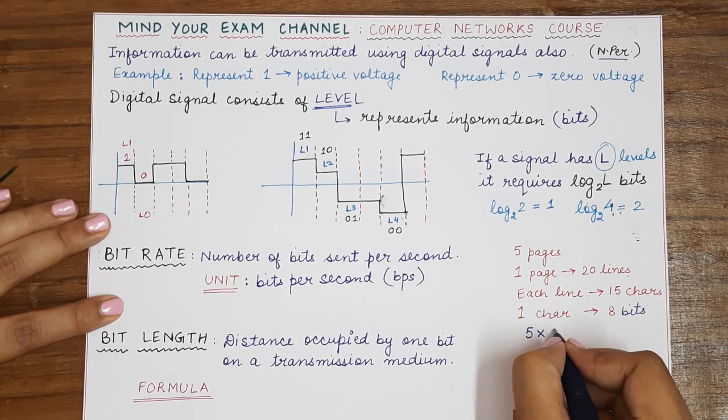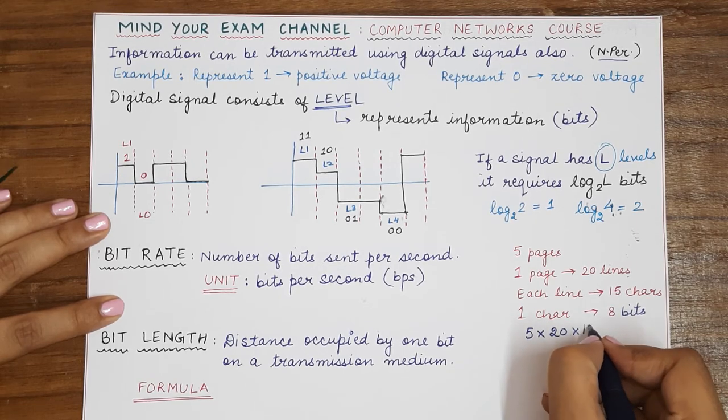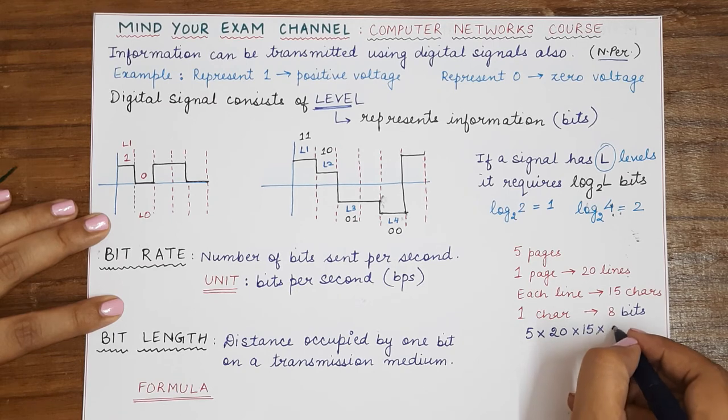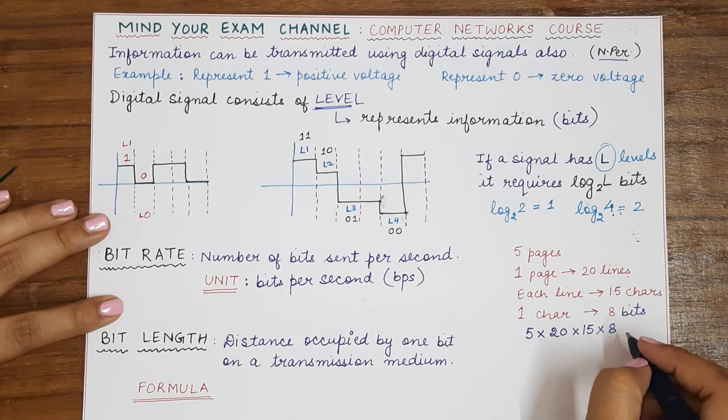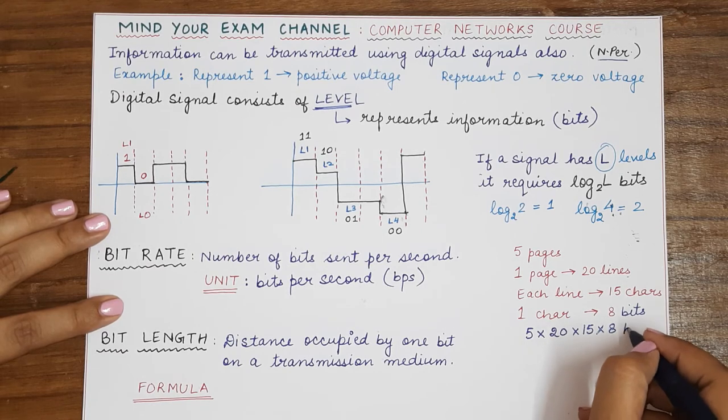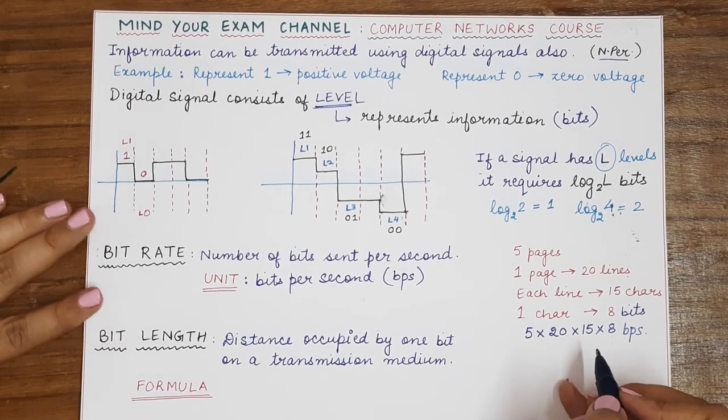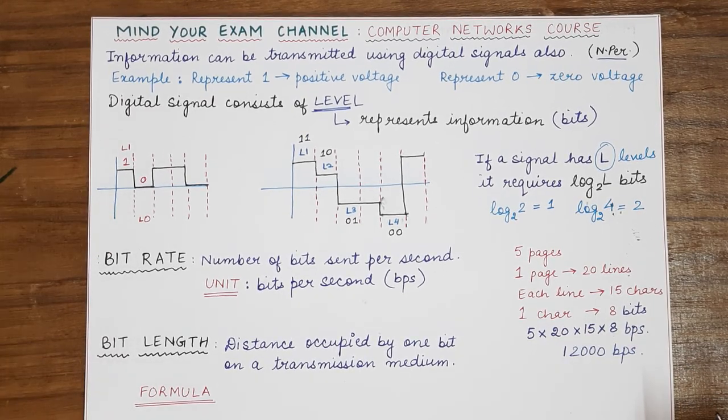5 multiplied by 20 because five pages, each consisting of 20 lines, each line consisting of 15 characters and each character occupying eight bits. If you have to download five pages per second, then this will be the bit rate per second. So this will come around 12,000 BPS.